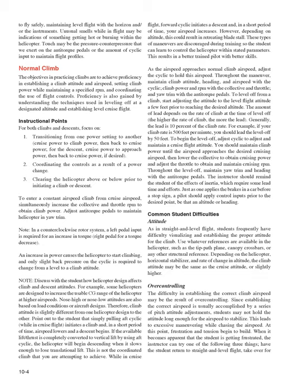Instructional Points for Climbs and Descents. Focus on: (1) transitioning from one power setting to another — cruise to climb power, then back to cruise power; for the descent, cruise to approach power, then back to cruise power if desired; (2) coordinating the controls as a result of a power change; (3) clearing the helicopter above or below prior to initiating a climb or descent. To enter a constant airspeed climb from cruise airspeed, simultaneously increase the collective and throttle RPM to obtain climb power. Adjust anti-torque pedals to maintain trim. In a counterclockwise rotor system, left pedal input is required for an increase in torque, right pedal for a torque decrease. An increase in power causes the helicopter to start climbing, and only slight back pressure on the cyclic is required to change from a level to a climb attitude.